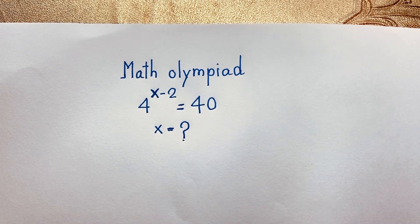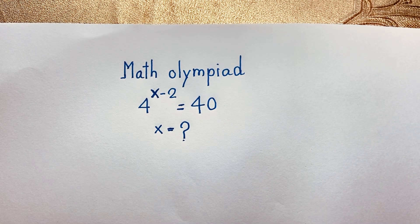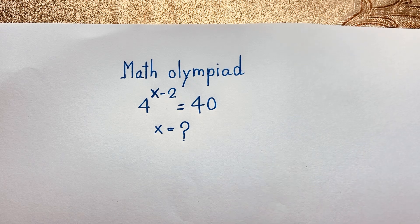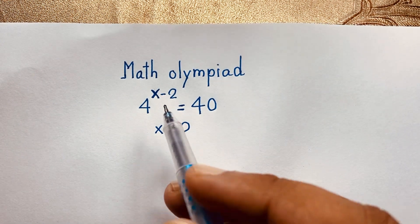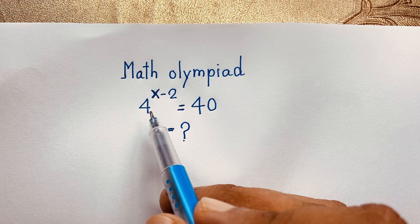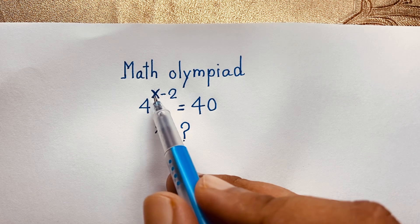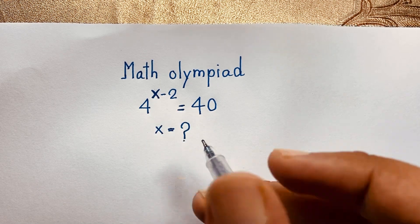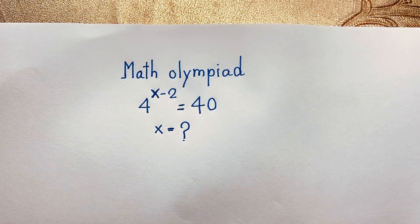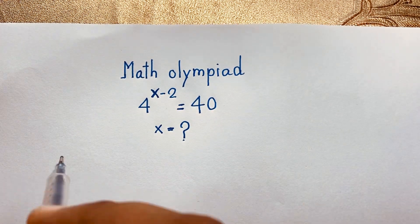Hello everyone, welcome to Rasha's classroom. Today we are solving an interesting viral math Olympiad question. This exponential math question is 4 to the power x minus 2 is equal to 40. x is equal to what? How to solve this question?